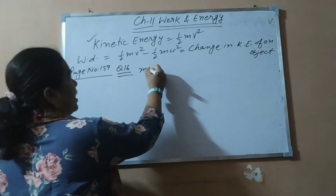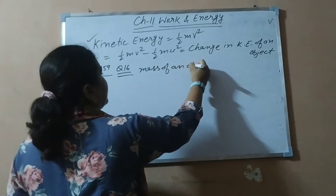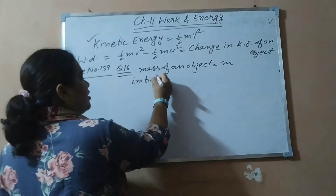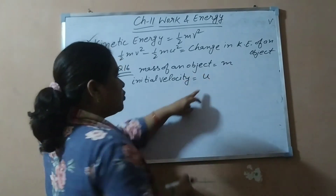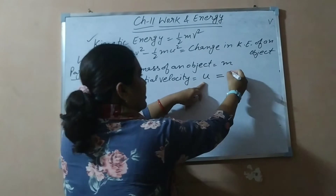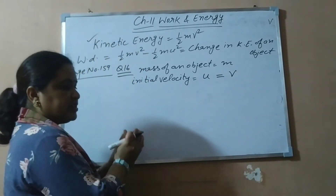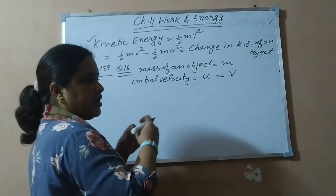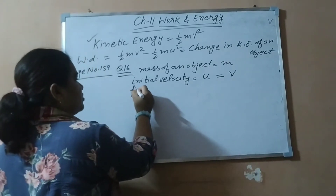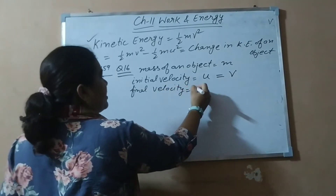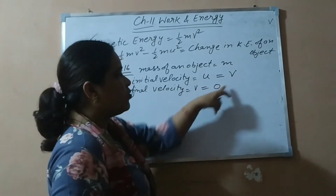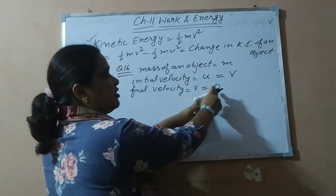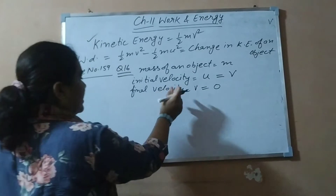So for question number 16, what is given? Mass of the object is M. With what initial velocity is it moving? Initial velocity is given as V, because in the question it says the object is moving at velocity V. So that is the initial velocity. And since we have to calculate the work done when the body gets stopped, the final velocity is 0.